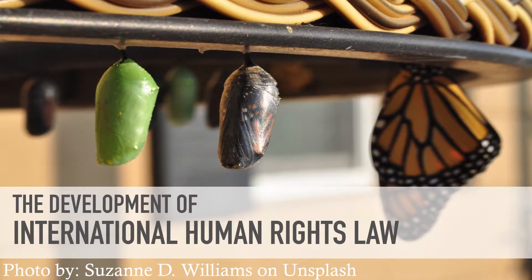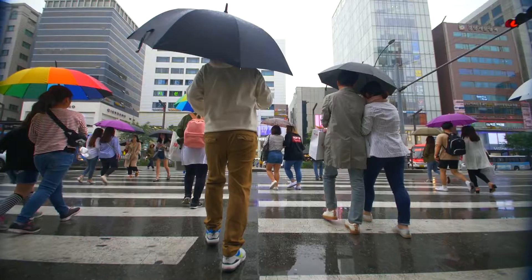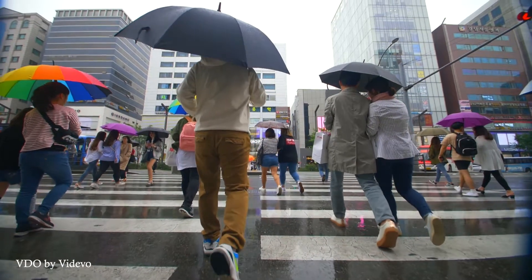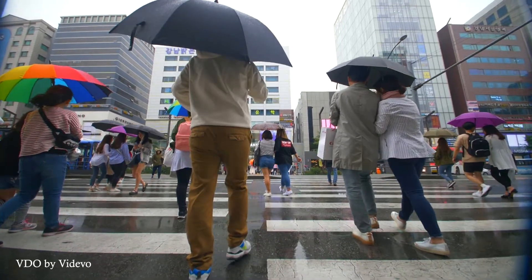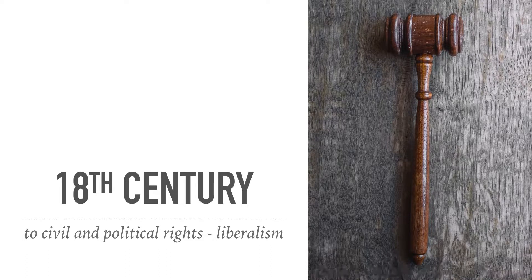The development of international human rights law is usually classified along three or even four generations of rights. The first generation refers to civil and political rights, many of which have been recognized on domestic levels at the end of the 18th century in the spirit of liberalism.